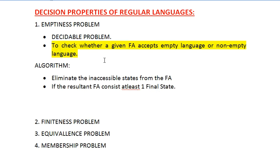The algorithm for the emptiness problem works as follows. The first step is to eliminate all inaccessible states — states that cannot be reached from the initial state of the finite automaton. The second step is to check if the resultant finite automaton has at least one final state. If it does, the automaton may accept a non-empty language; if there are no reachable final states, it accepts an empty language.